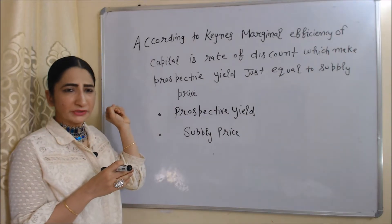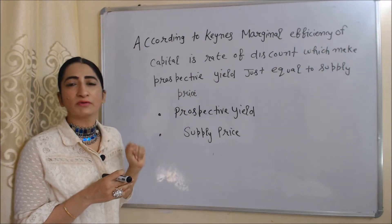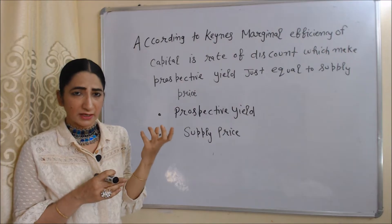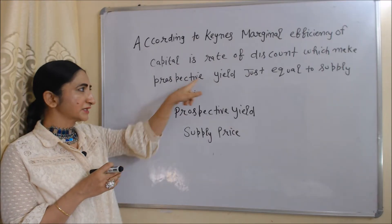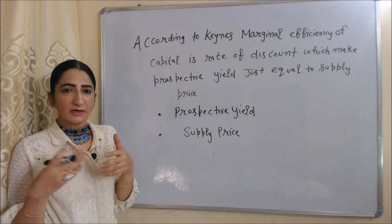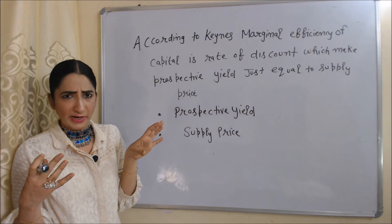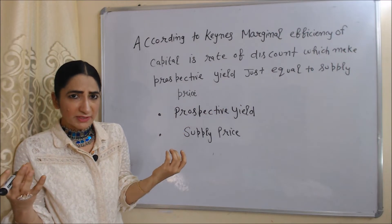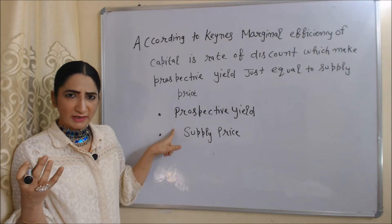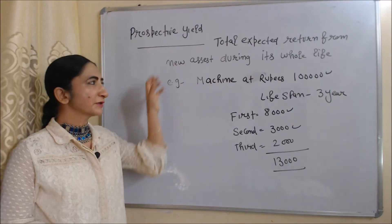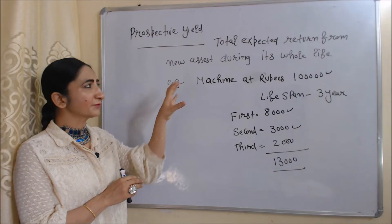Keynes gave a specific concept of marginal efficiency of capital. According to Keynes, marginal efficiency of capital is the rate of discount which makes prospective yield just equal to supply price. To understand marginal efficiency of capital, we must know what is prospective yield and what is supply price. These are the two main determinants of marginal efficiency of capital.